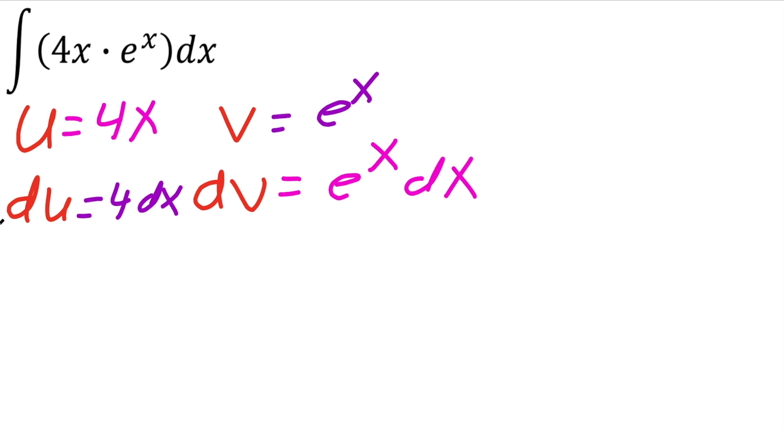Now we can put everything in the formula, and the formula is for integration by parts, u dv is equal to u times v minus the integral of v du.